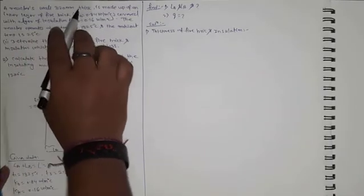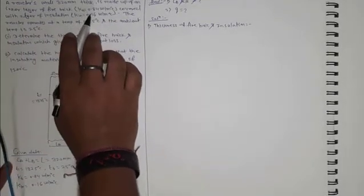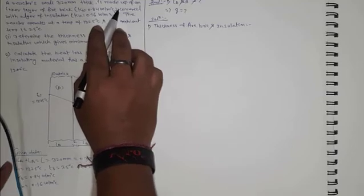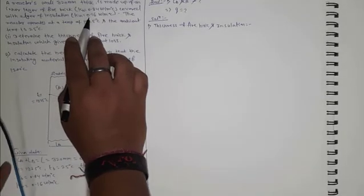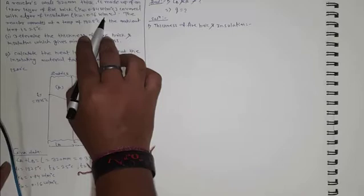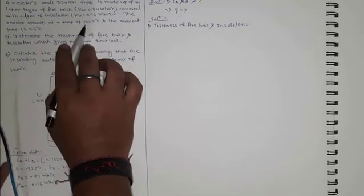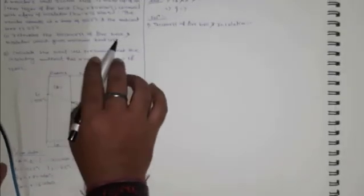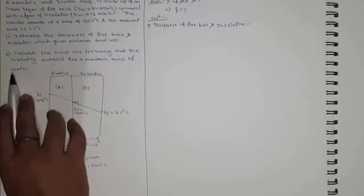A rectangular wall 320mm thick is made up of an inner layer of fire brick with thermal conductivity 0.84 W/m°C, covered with a layer of insulation with thermal conductivity 0.16 W/m°C. The reactor operates at 1325°C and ambient temperature is 25°C. First, determine the thickness of fire brick and insulation that will give minimum heat loss. Second, calculate the heat loss presuming the insulating material has a maximum temperature of 1200°C.